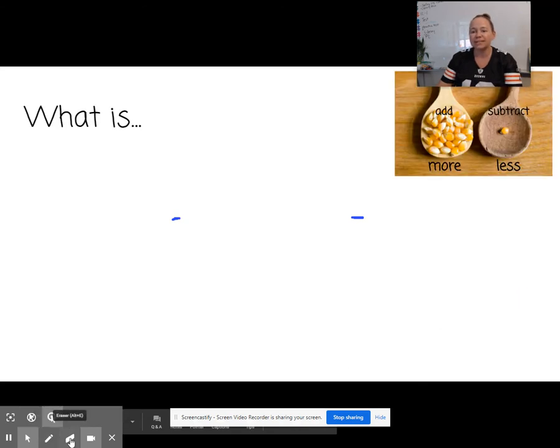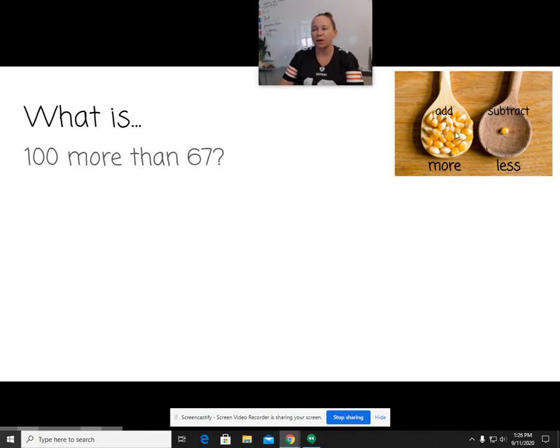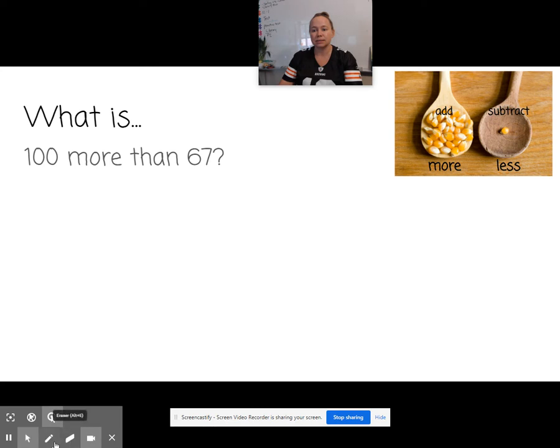What is 100 more than 6,700? Remember that when they're asking you for more, that means you're adding 2. If they're asking you for how many less, you're going to be taking away. Okay? So 100 more than 67. So we're going to add 100 plus 67. And you've got 167, right? Great.